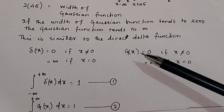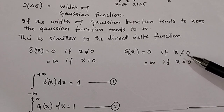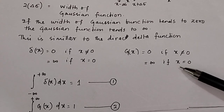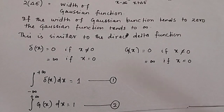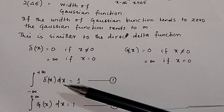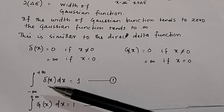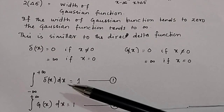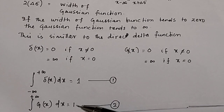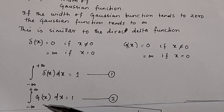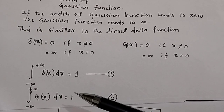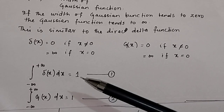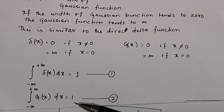Similarly, the Gaussian function g(x) equals 0 if x is not equal to 0, and equals infinity if x equals 0. The key identity of the Dirac delta function is that the integral from minus infinity to plus infinity of delta(x) dx equals 1. If we can show that for the Gaussian function the integral of g(x) dx from minus infinity to plus infinity equals 1, then the Dirac delta function is a limit of the Gaussian function.